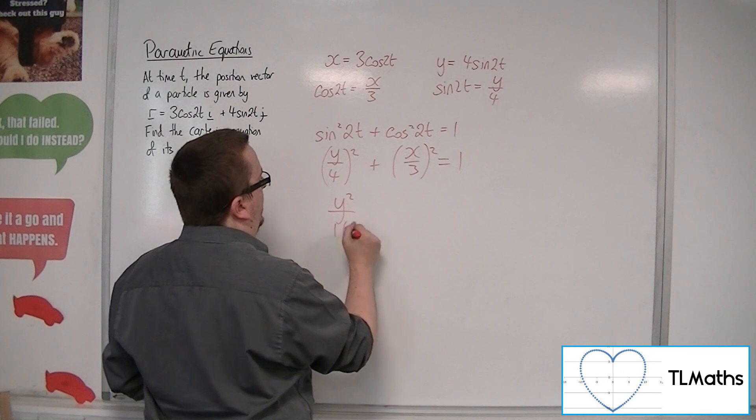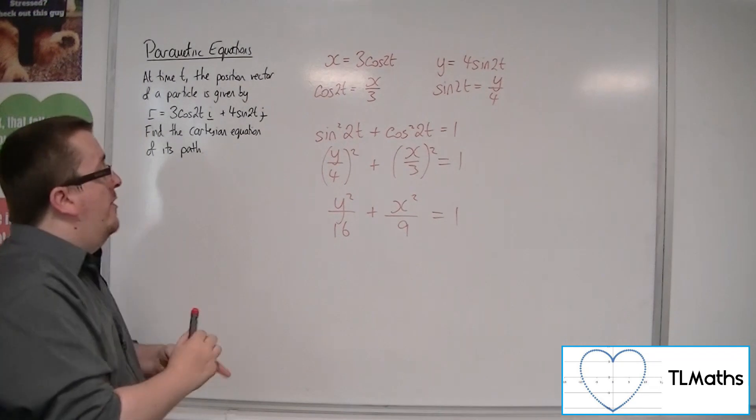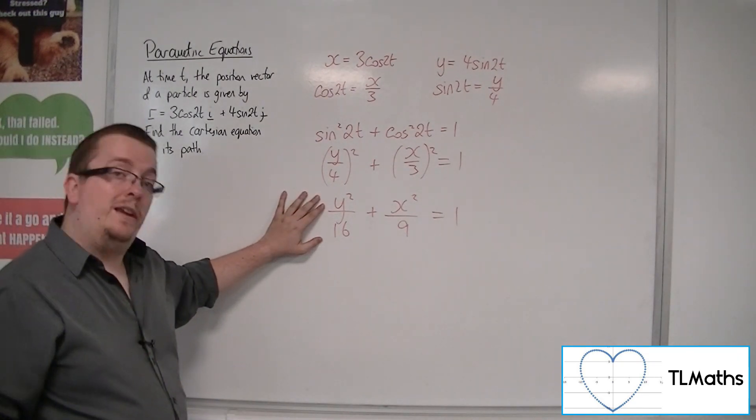Or y squared over 16 plus x squared over 9 is equal to 1. And that is the equation of an ellipse.